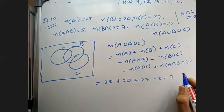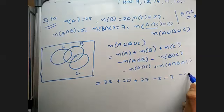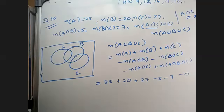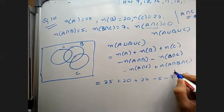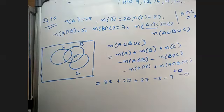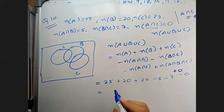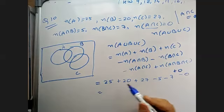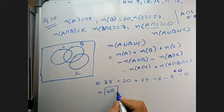A intersection C is 0, and number of elements in A intersection B intersection C will also be 0. So there is no need of the last two terms. This gives us 27 minus 7 is 20, 25 minus 5 is 20, and 20 plus 20 plus 20 is 60. So 60 is the answer to question number 10.